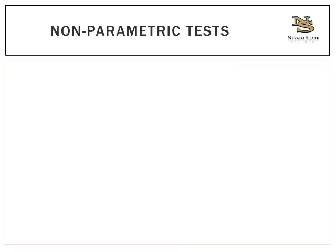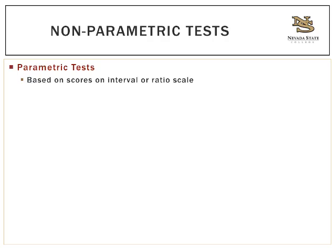So what are nonparametric tests? Let's start with parametric tests, since that's what you've been doing. These are based on scores on an interval or ratio scale — you get lots and lots of scores from various people and then do something with those scores. You use statistics such as the mean, standard deviation, or variance of your sample to infer the parameters of a larger population. This is what makes it parametric: we're taking lots of scores and computing certain numbers from them so they can tell us something about the population.